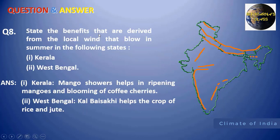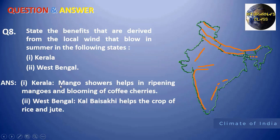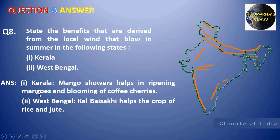Next: state the benefits derived from local winds that blow in summer in the following states. In Kerala, there is development of local convection currents during the hot weather season, giving rise to mango showers, which help in ripening mangoes and blooming of coffee cherries. In West Bengal, the Kalbaisakhi helps crops rise and shoot during the hot weather season.